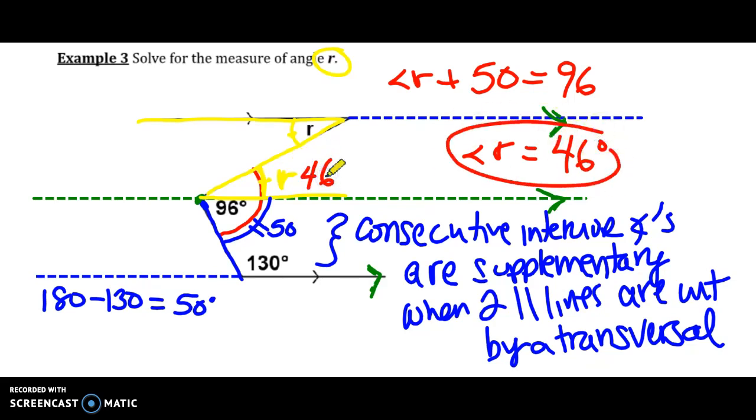So this piece is 46. And using alternate interior angles being congruent when two parallel lines are cut by a transversal, these pieces are the same. And that's it for this example.